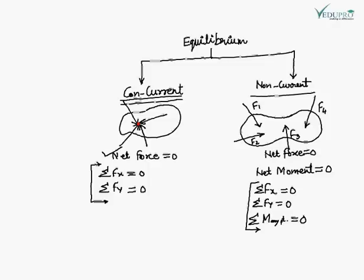تو اگر یہ تینوں conditions simultaneously exist کریں گی then only we can say that the body is in equilibrium. So for concurrent forces, these two conditions should satisfy: sigma Fx = 0 and sigma Fy = 0. And for non-concurrent force system, these three conditions should satisfy: sigma Fx = 0, sigma Fy = 0, and sigma M about any point = 0. These are the conditions of equilibrium of a body.